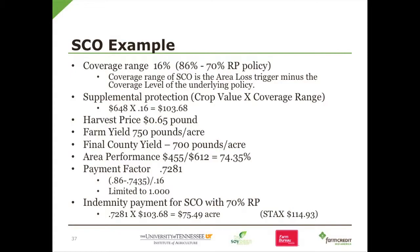As in the STAX example, price drops to 65 cents a pound, our farm yield comes in at 750 pounds, and the county average is 700 pounds. With similar calculations, our area performance is going to be 74.35%. Our payment factor is going to be 0.7281 — that's where we take 0.86 minus the area of performance, divided by the range of 0.16, limited to one. The SCO payment with a 70% RP is 0.7281 times $103.68, which equals $75.49 per acre. As a comparison, STAX was $110.93.